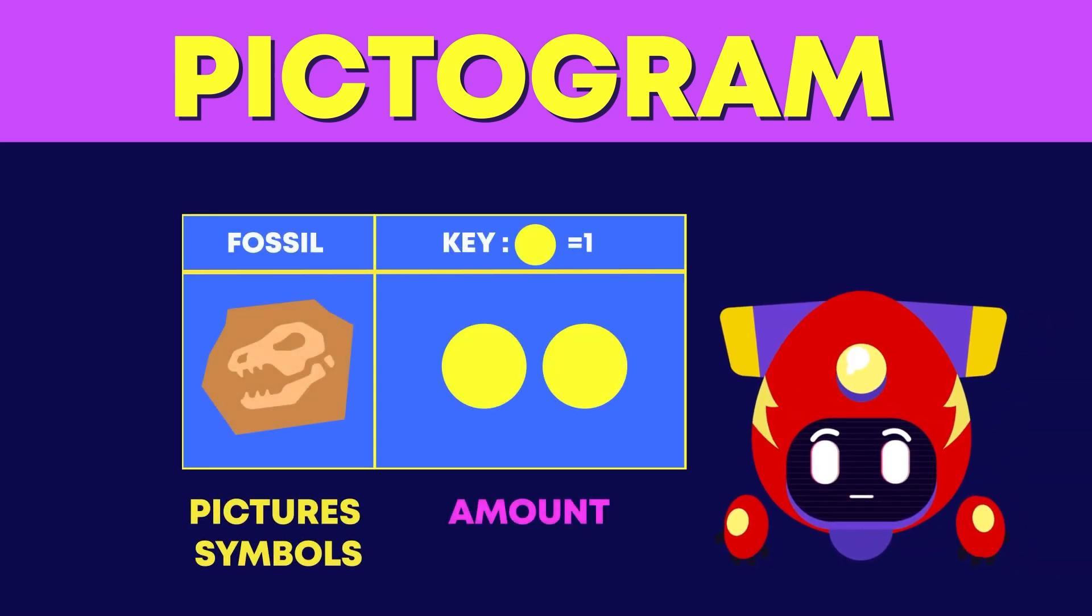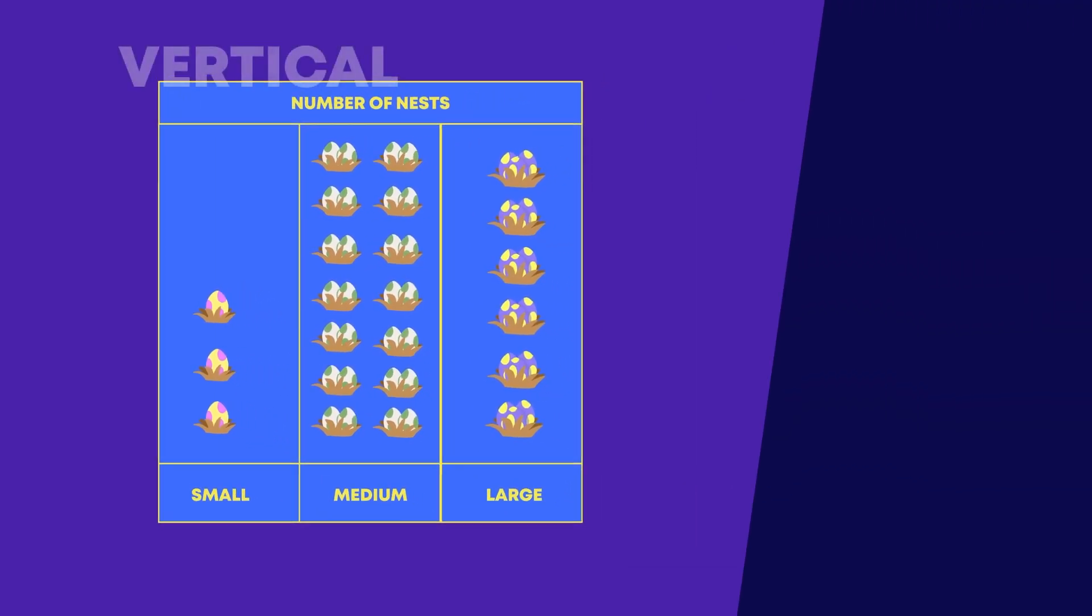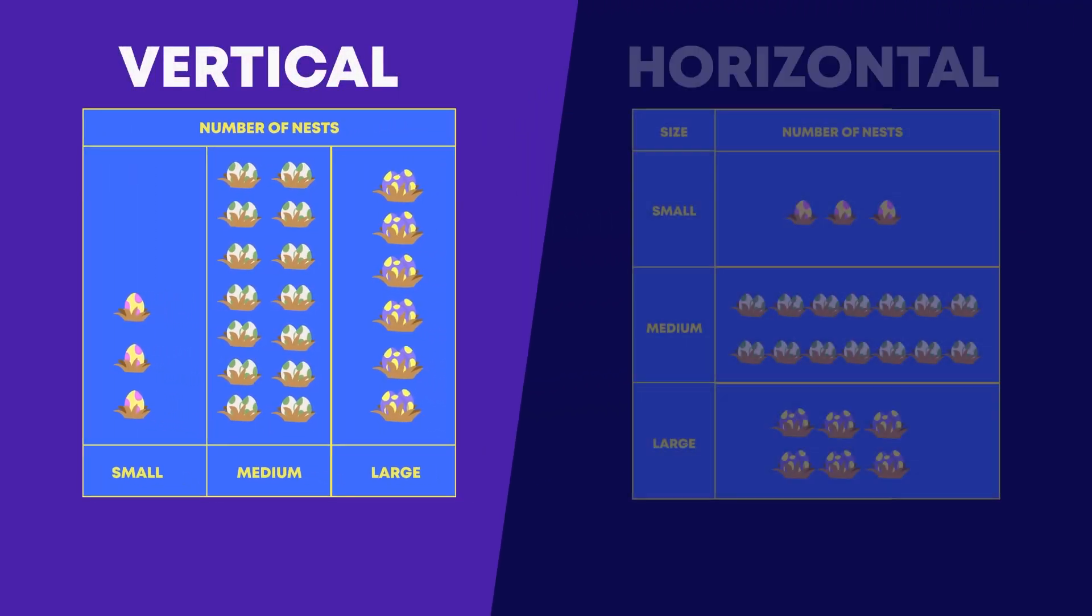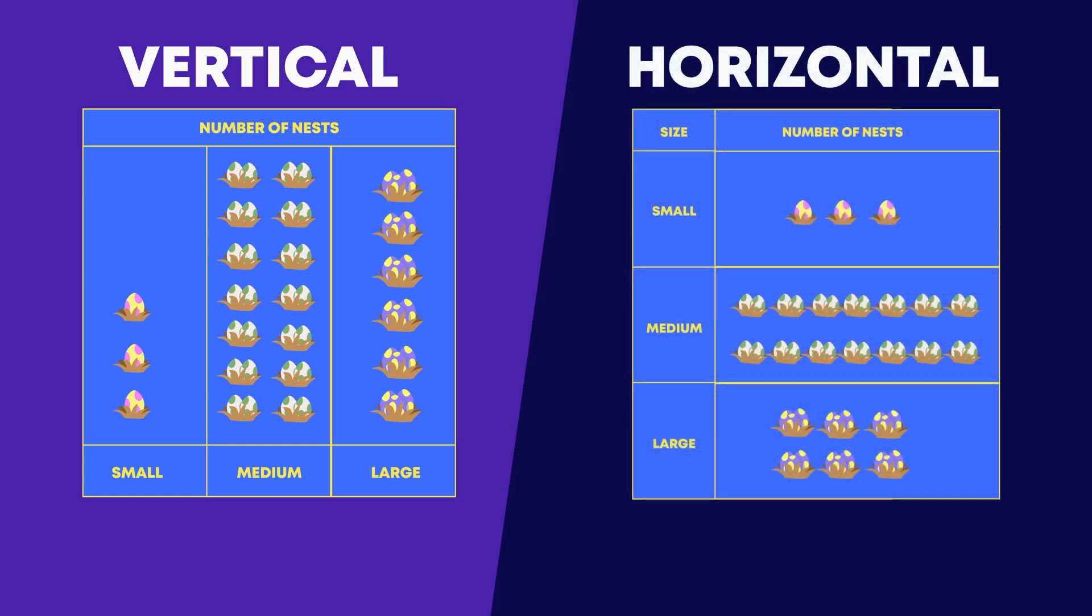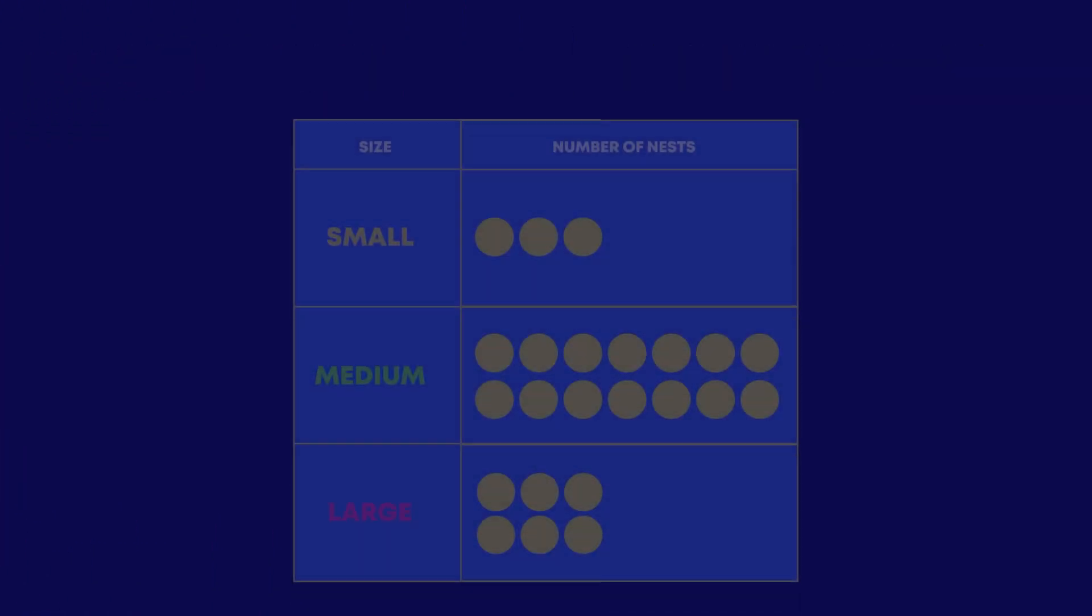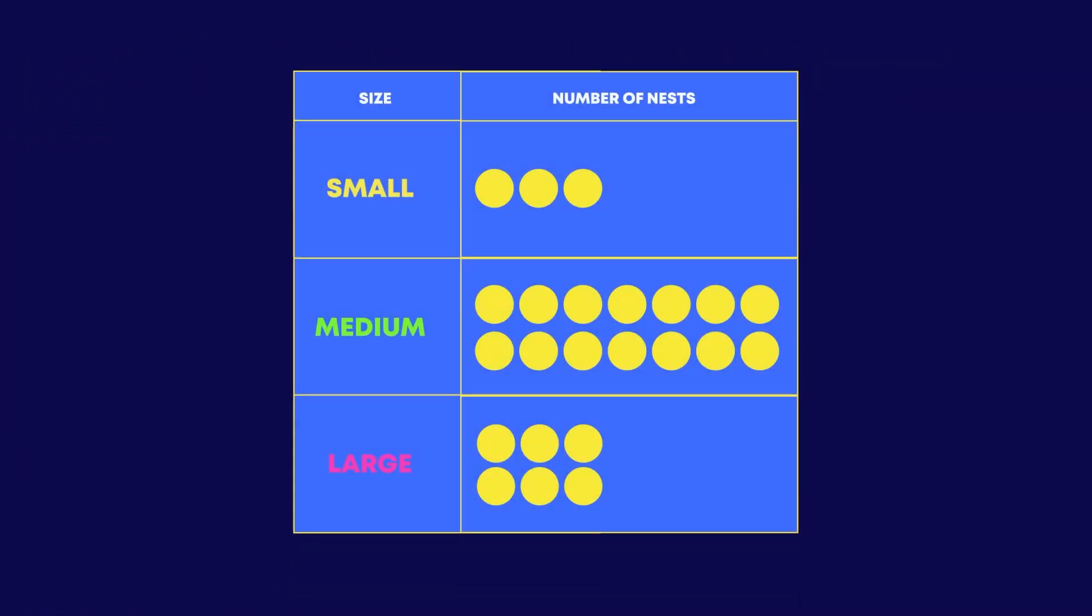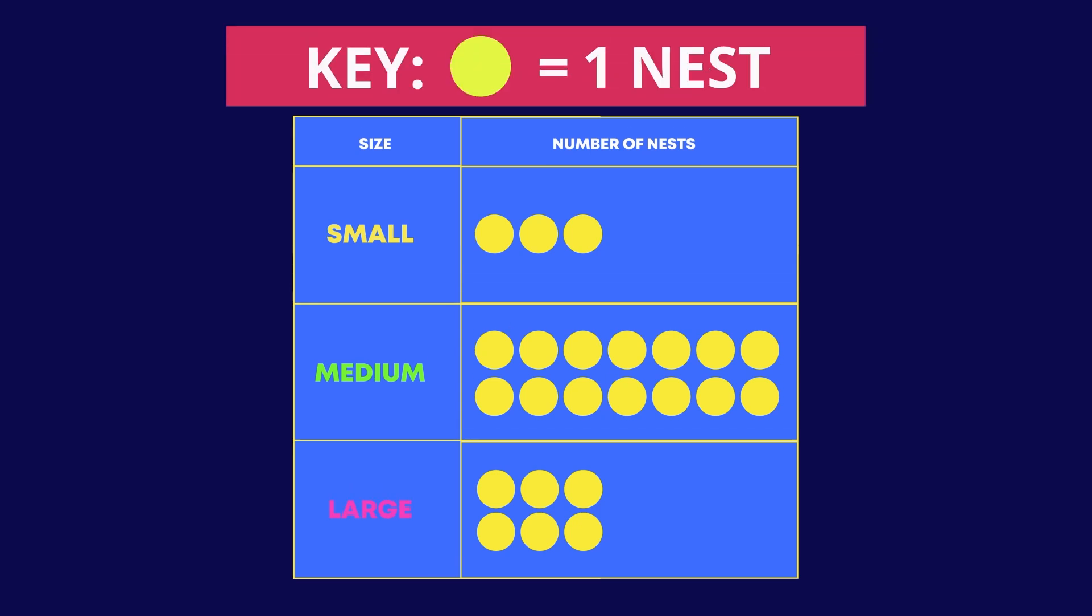Pictograms show how many there are in each group. Pictograms can be vertical or horizontal. The space rangers recorded how many dinosaur nests there are using a pictogram. This pictogram is using symbols. Pictograms have a key to explain the symbols.